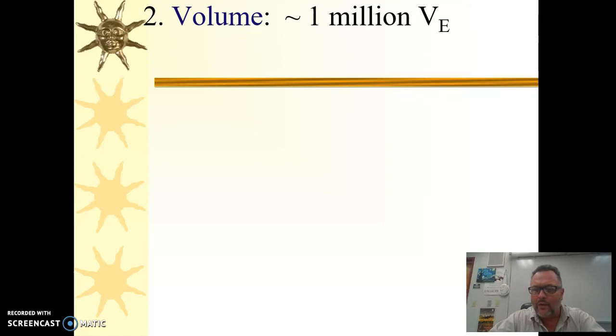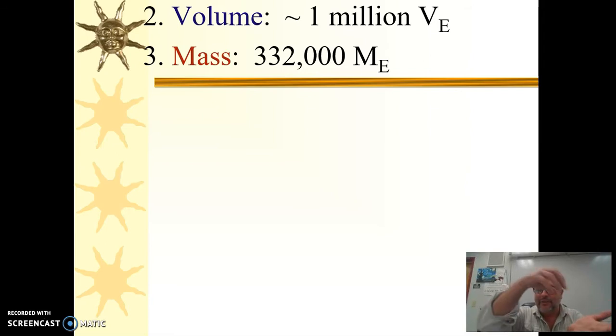About the weight of the sun, the mass of it. We can get that based on how fast the planets orbit around the sun. We can pretty easily calculate its mass. And we come up with 332,000 times the mass of Earth. So if you had a scale and you put the sun on one side, you're going to have to put 332,000 Earths on the other side to balance it. Just mind-boggling.